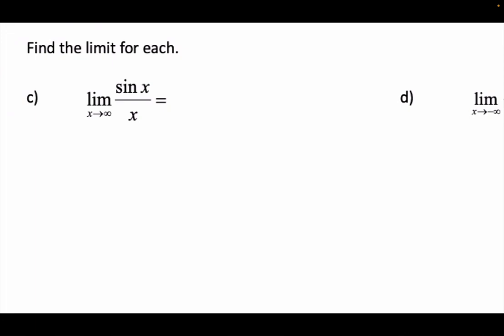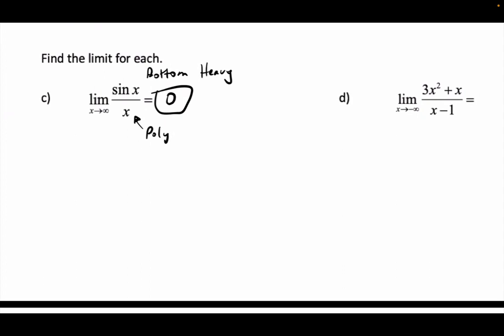Example c: the limit as x approaches infinity of sin(x) over x. The top is a trig function — sine, cosine. The bottom is x, which is linear — that falls under polynomial. So the top is trig, the bottom is polynomial — it's bottom-heavy, which equals zero. The top is just going to be between -1 and 1. The bottom can be as big as you want, so it gets bigger faster.